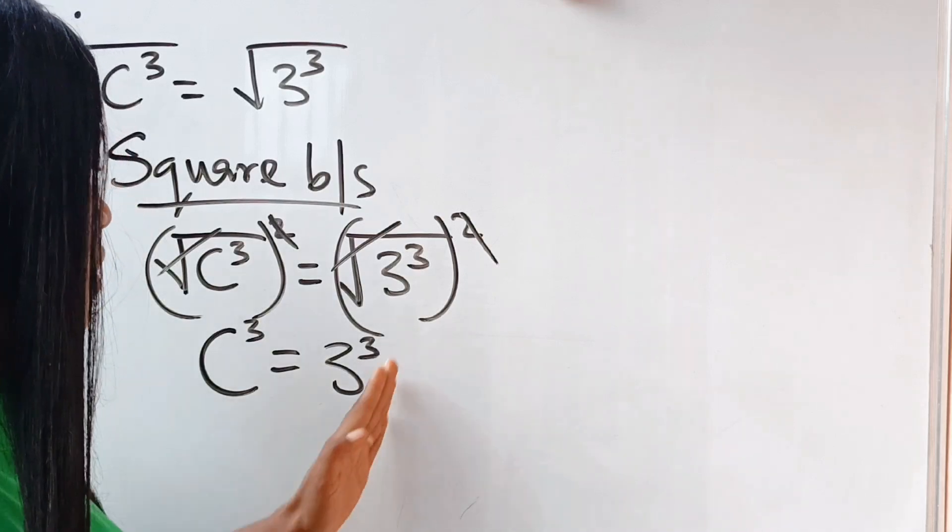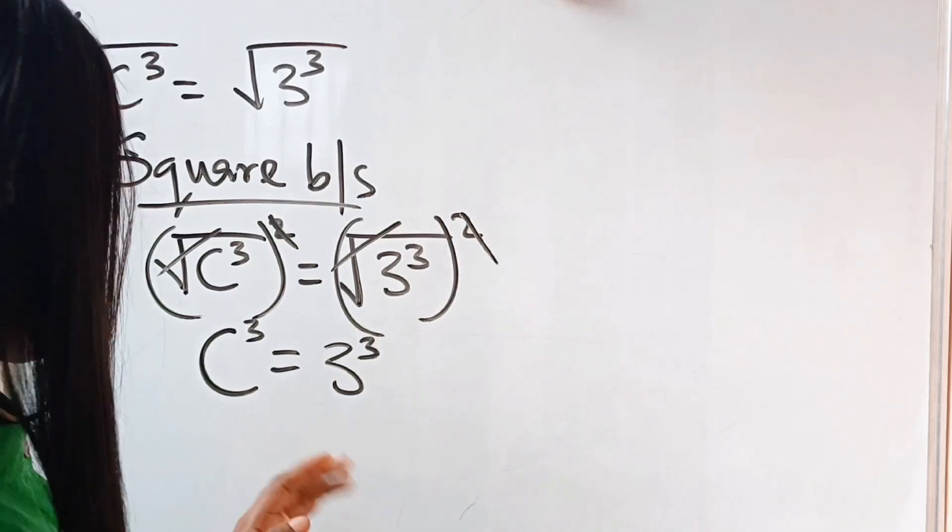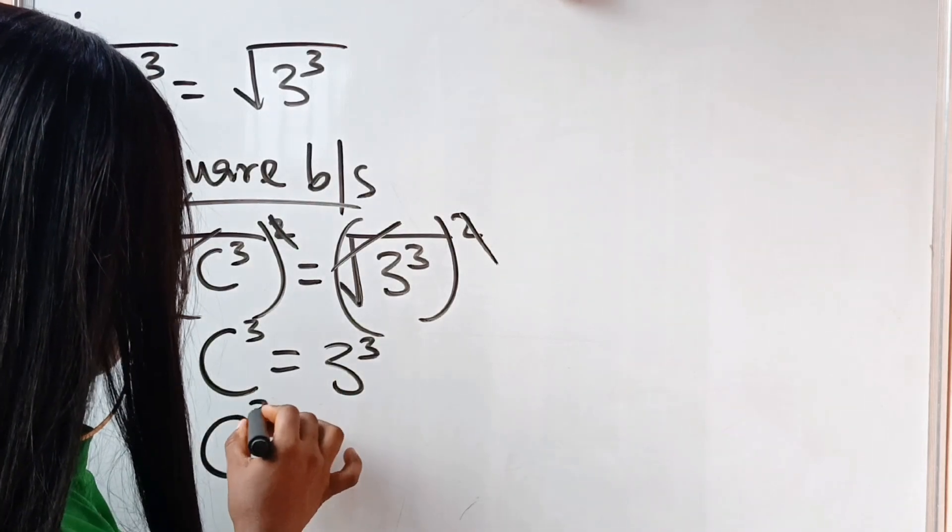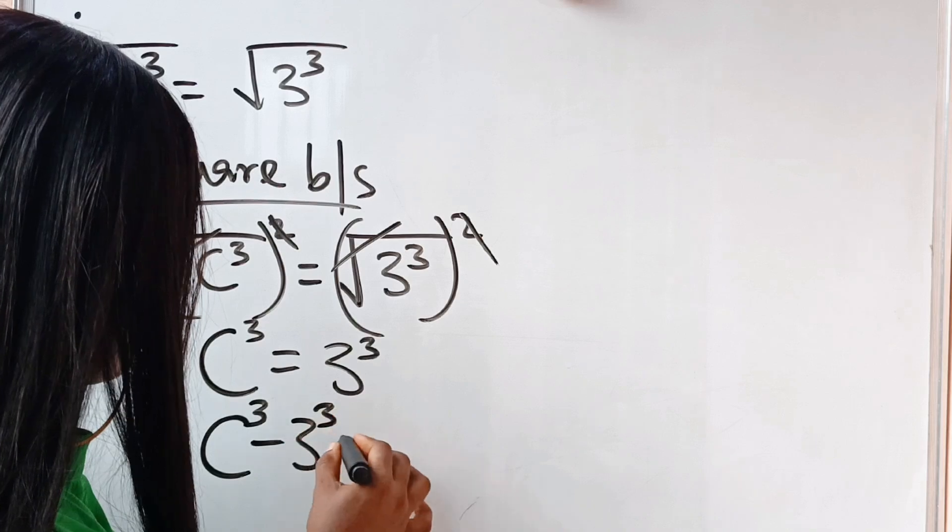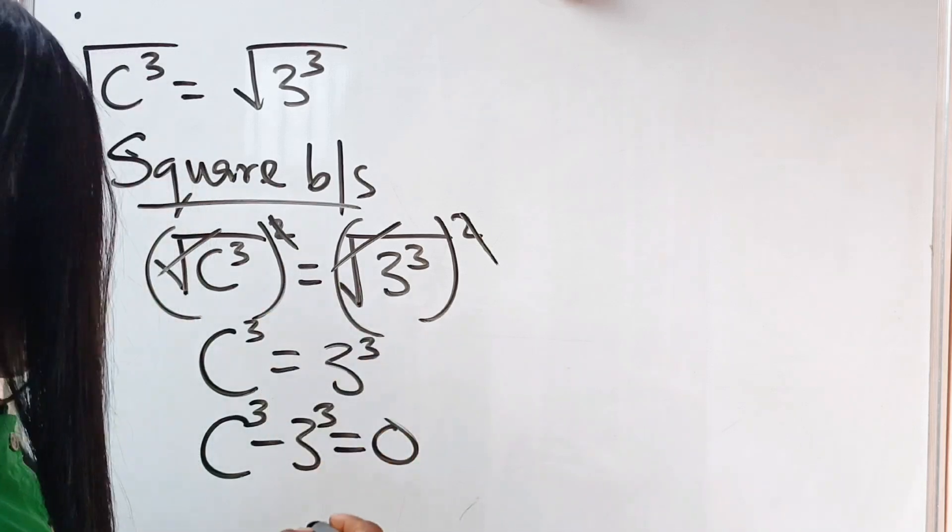Now let's bring this to this side of the equation. So if we do that, we have c to the power of 3 minus 3 to the power of 3 is equal to 0.